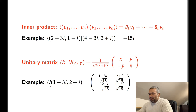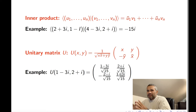As an example, U of (1 − 3i, 2 + i) is equal to a specific unitary matrix. Essentially, U takes a pair of complex numbers into a unitary matrix — it produces a unitary matrix for every pair of complex numbers.